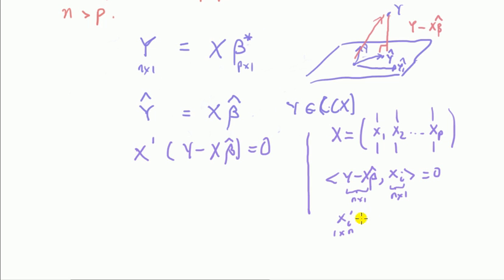But to write this as zero is the same as saying if Xi transpose, which now makes it a one by N row vector, times by Y minus X beta hat, which is N by one, is equal to zero.